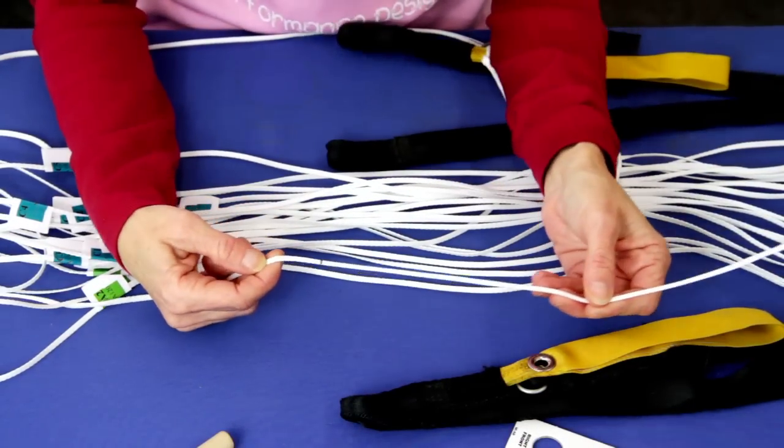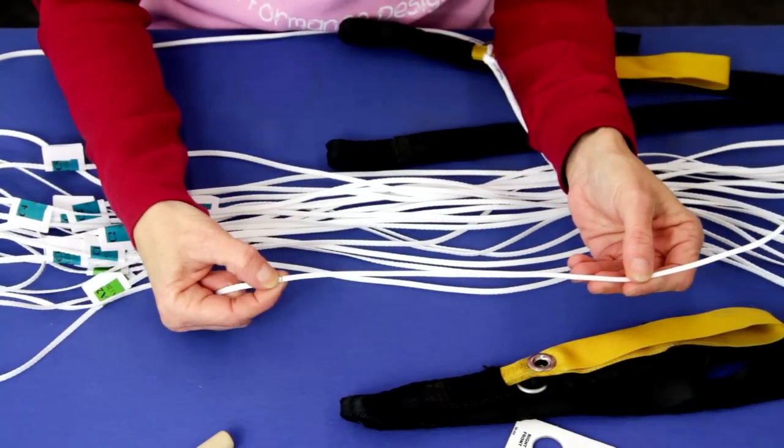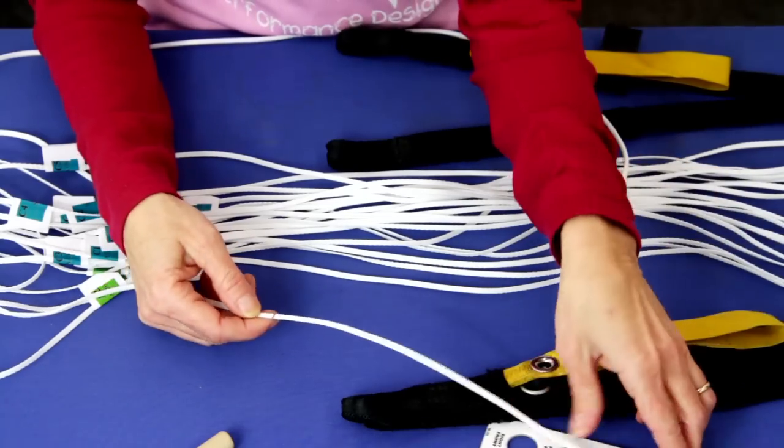Start by locating the black mark near the end of the control line. The next step is to measure the line fold point below the black mark.